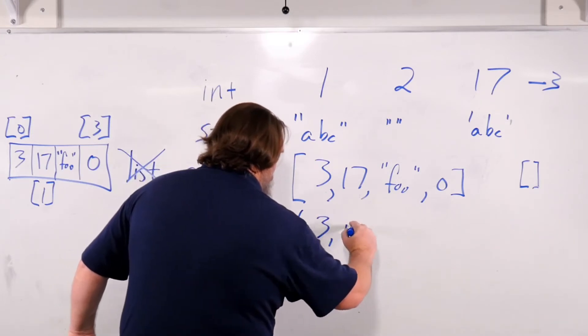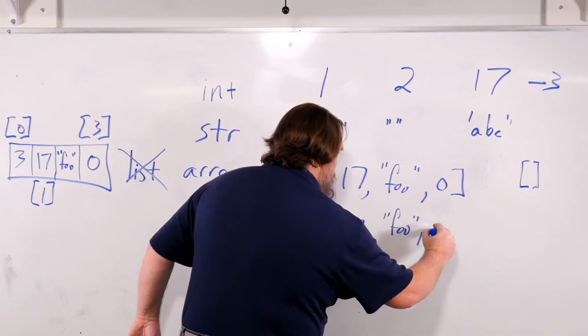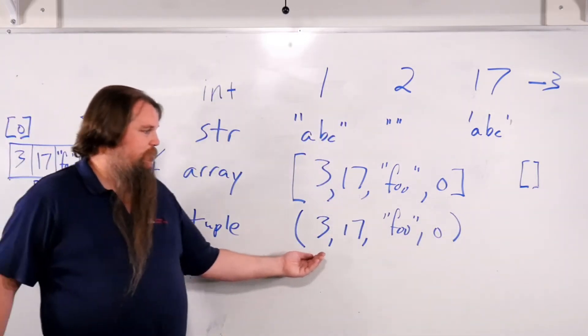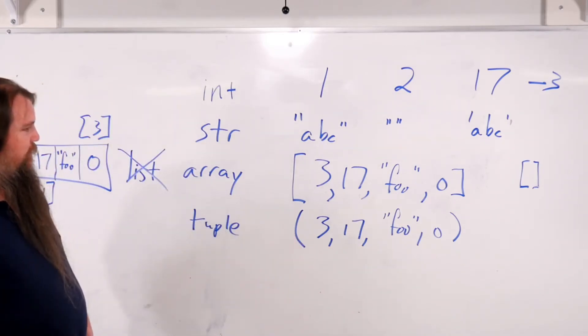So this would be 3, 17, foo, 0. And that is a tuple that has 4 elements in it.